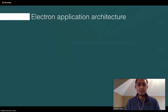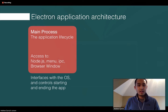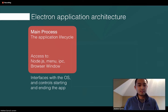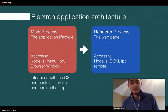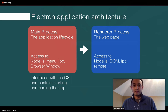A typical Electron application architecture has two types of processes. The main process handles the application lifecycle — it interfaces with the operating system and controls starting and ending the application. It has access to modules such as Node.js, menu for native system menus, IPC which is the communication protocol among all processes, and browser window — a constructor function that spawns off renderer processes. IPC also allows communication to other renderer processes, and remote allows a renderer process to run actions in the main process.